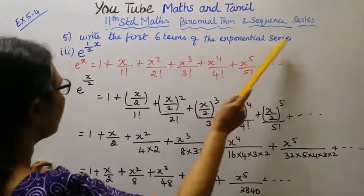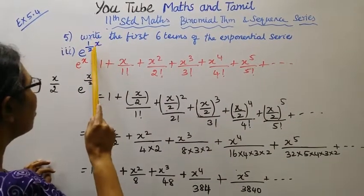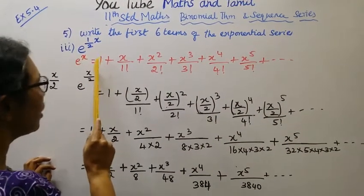Write the first 6 terms of the exponential series: e power 1 by 2 into x, which is e power x by 2, in 6 terms.